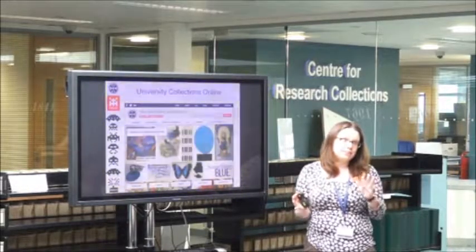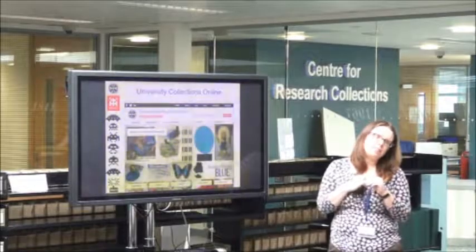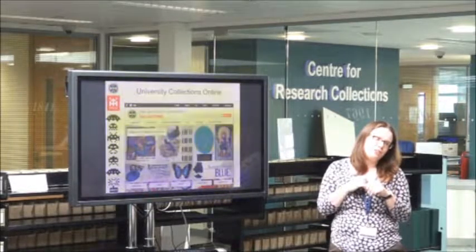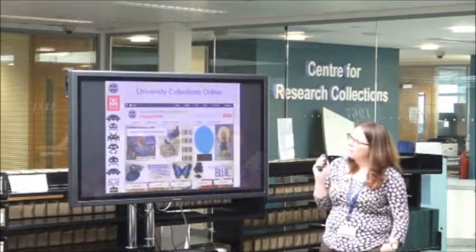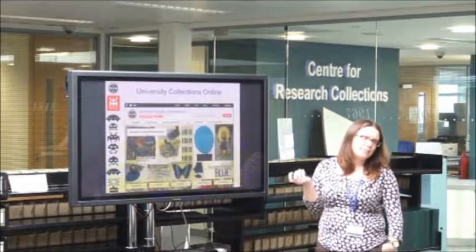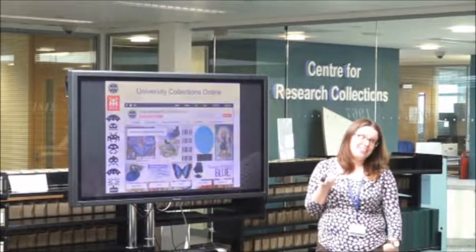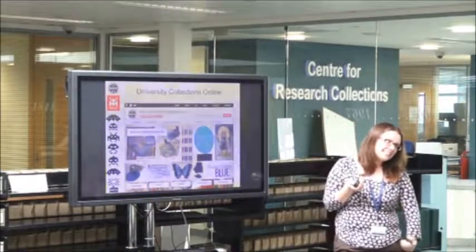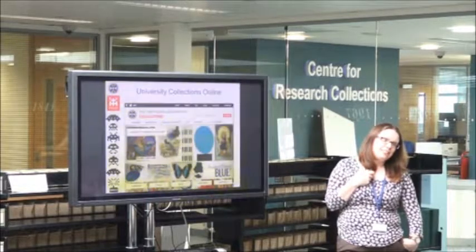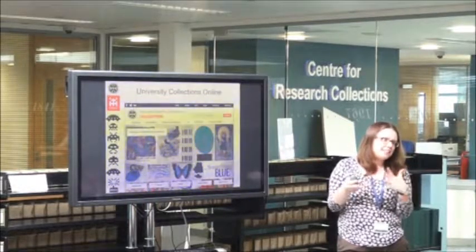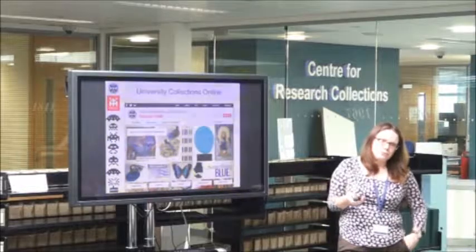A lot of the art collection is digitised but not all of it, so some of it is metadata-only records. We've also launched our iconic collection — our top iconic items. The curators had lots of fun deciding the top 50 items in our collections. We also have our exhibitions: we have an exhibition room downstairs with a rolling exhibition programme. This summer, Dolly the Sheep is coming to the library as part of our exhibition programme, and we're hoping that will bring lots of people in during the festival.